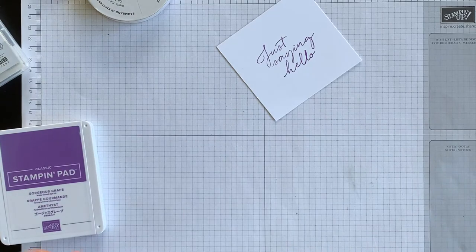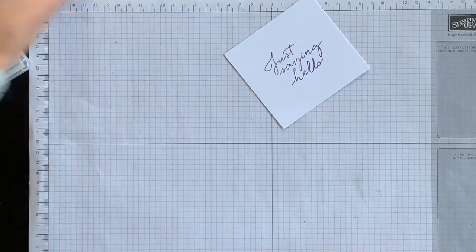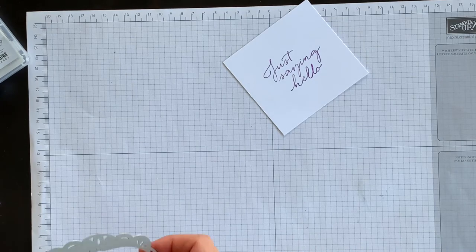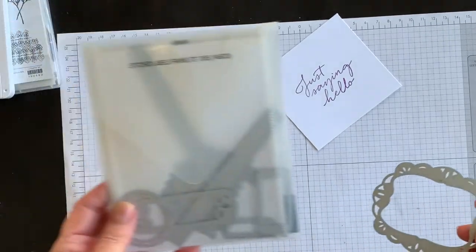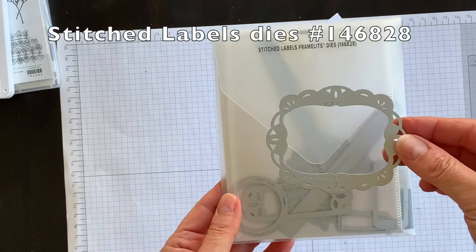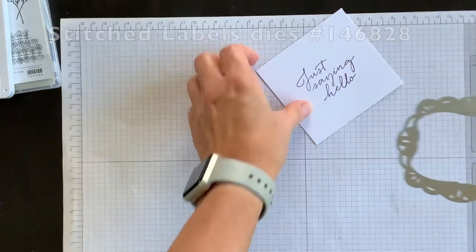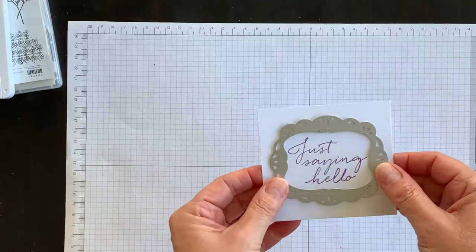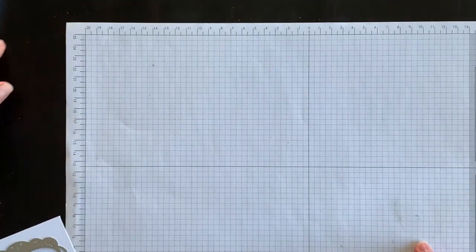Then I'm going to bring in my die cutting and embossing machine and I have one of the stitched labels framelits, this particular framelit here, and I'm going to die cut the phrase from the Whisper White piece of cardstock. So let me bring in my machine.